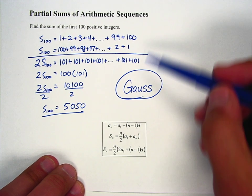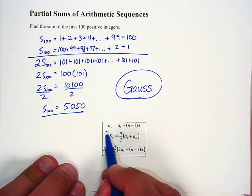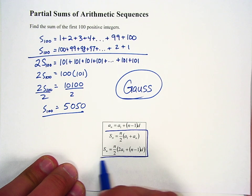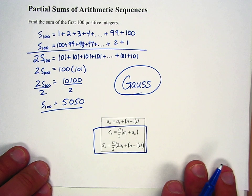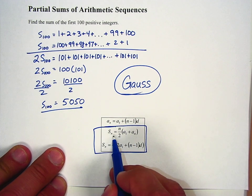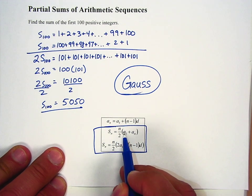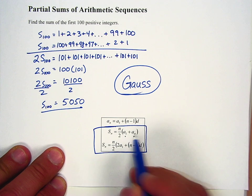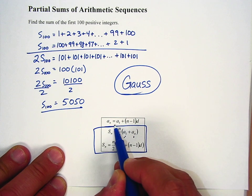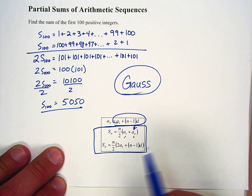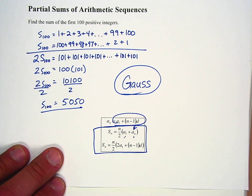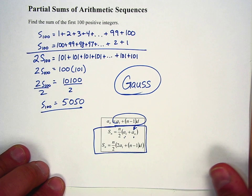This process gives us two formulas for finding the sums of arithmetic sequences. The first is S_N = (N/2)(A₁ + A_N) — first term plus last term. Substituting in for the last term gives the second formula: S_N = (N/2)(2·A₁ + (N−1)·d). Either formula works really well.